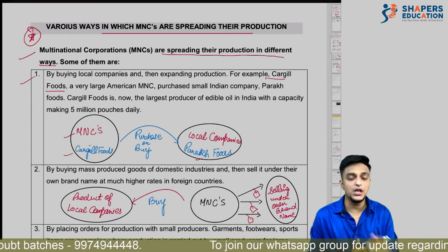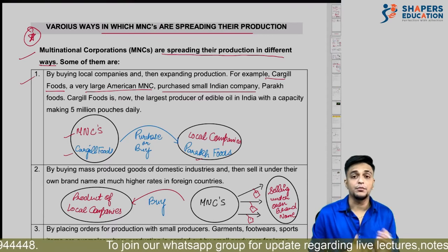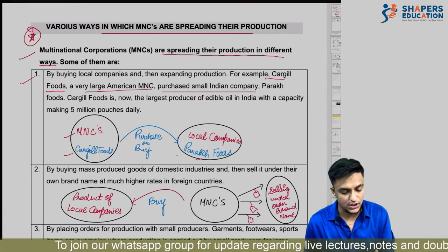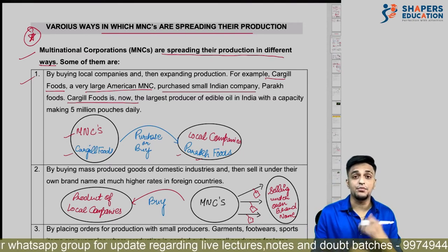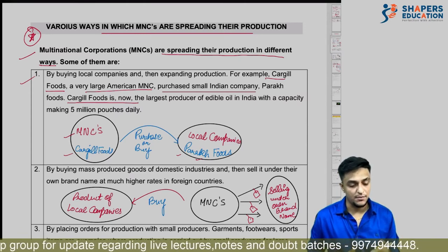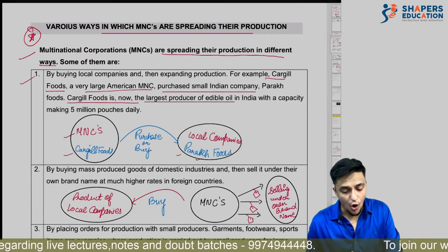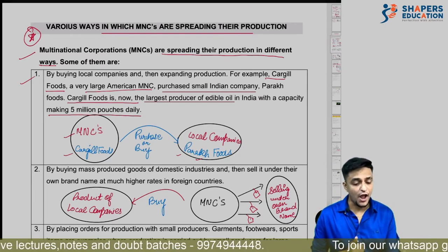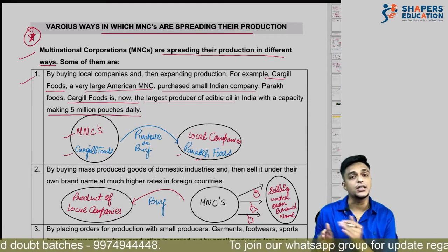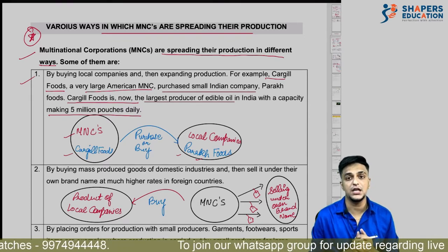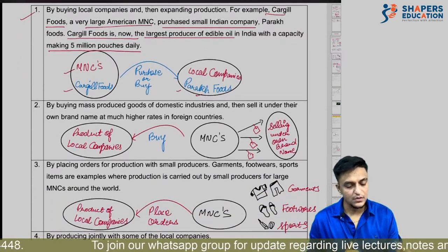Example: Cargill Foods, an American MNC, purchased a small Indian company called Parak Foods. After purchasing it, Cargill expanded its production in India. Today Cargill Foods is the largest producer of edible oil in India, with a daily capacity of 5 million pouches of oil. So the first way is by buying local companies.